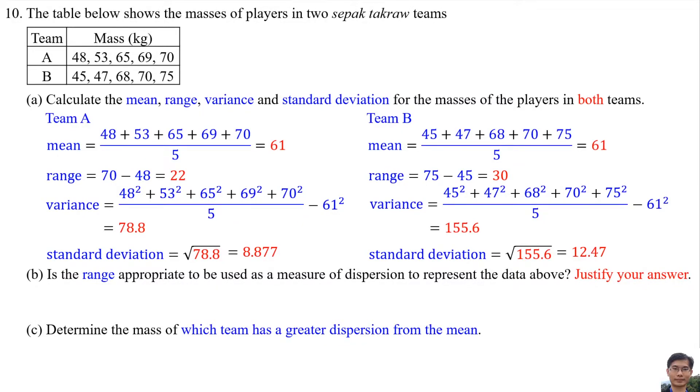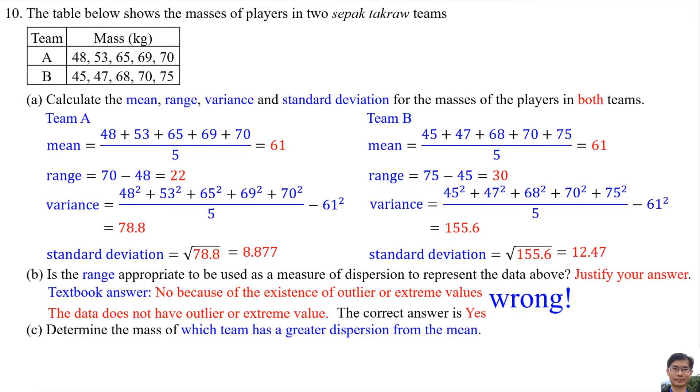Part (b): Is the range appropriate to be used as a measure of dispersion to represent the data above? Justify your answer. The textbook answer is 'No, because of the existence of outlier or extreme values.' But the answer is wrong because the data does not have outlier or extreme value. The correct answer is Yes.